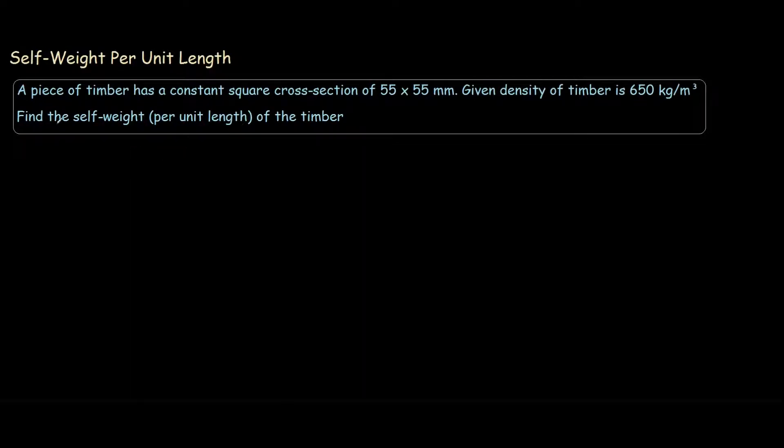The first step is to find the cross-sectional area of the timber. We know from the question it is 55 by 55, which comes out to 3,025 millimeters squared.